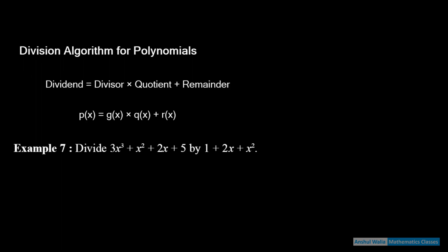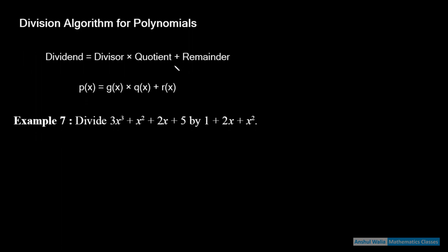So the first thing is division algorithm for polynomials। इसमें division algorithm क्या होता है — एक recall कराता हूँ। अगर मैं 7 को 2 से divide कर रहा हूँ, तो 2 into 3 = 6।